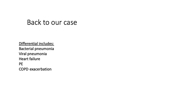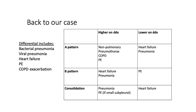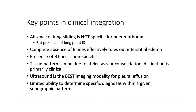Part three covers clinical integration. Going back to our case and differential: if we find an A pattern, it moves certain diagnoses higher, including non-pulmonary processes, pneumothorax, COPD, or pulmonary embolism. A B pattern moves heart failure and pneumonia higher on the differential. A consolidation pattern moves pneumonia higher. PE can also cause consolidation if it's small and subpleural due to infarct. Key points: absence of lung sliding is not specific for pneumothorax, but presence of lung point is. Complete absence of B lines effectively rules out interstitial edema, but the presence of B lines is nonspecific. Tissue pattern can be due to atelectasis or consolidation, and the distinction is primarily clinical. Ultrasound is the best imaging modality for pleural effusion. Remember that ultrasound has limited ability to determine a specific diagnosis within a given sonographic pattern.